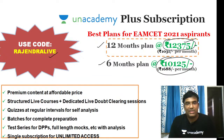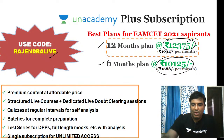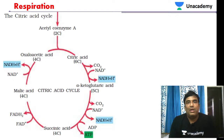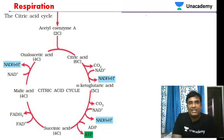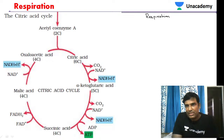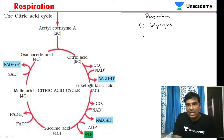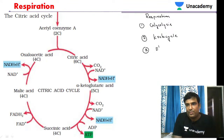That was about Anacademy Plus subscription. Now let us discuss today's topic on respiration, specifically the citric acid cycle. In the previous class, we discussed that respiration involves three stages: the first is glycolysis, the second is the Krebs cycle or citric acid cycle, and the third is the electron transport system.